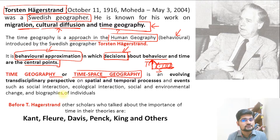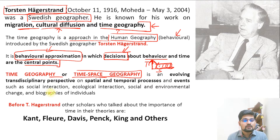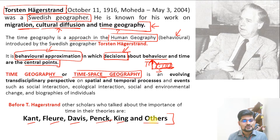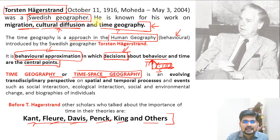Hägerstrand was not the first person to talk about time. Before him, numerous scientists, geographers, geomorphologists and scholars gave emphasis on the strength of time to understand processes and events on the earth's surface — the theories of Kant, Davis, Penck, Elsie King and several others all talked about time as a significant aspect. But in this session we will specify time geography as conceptualized by Torsten Hägerstrand.